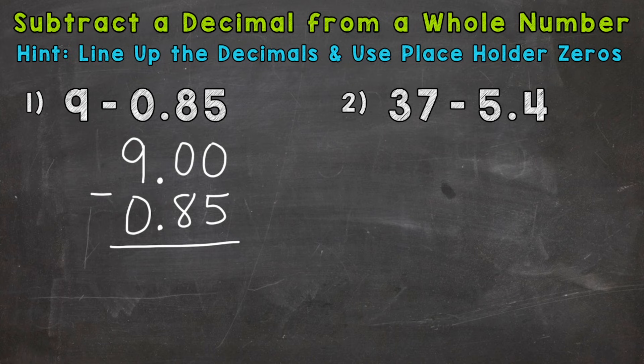So now we just subtract. Now, one of the most common mistakes would be just dropping that five and dropping that eight, but we need to borrow. So we need to borrow from this nine here. That's an eight. That becomes a 10, but we need to borrow again to bring that one over to the hundredths place.